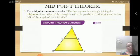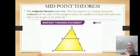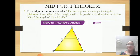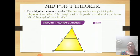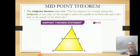The midpoint theorem states that the line segment in a triangle joining the midpoints of the two sides of the triangle is parallel to its third side and is also half of the length of the third side. You can see in the figure that triangle ABC where D and E are the midpoints of AB and AC respectively. Joining these midpoints we get a line segment DE which is parallel to the third side BC and half of BC.